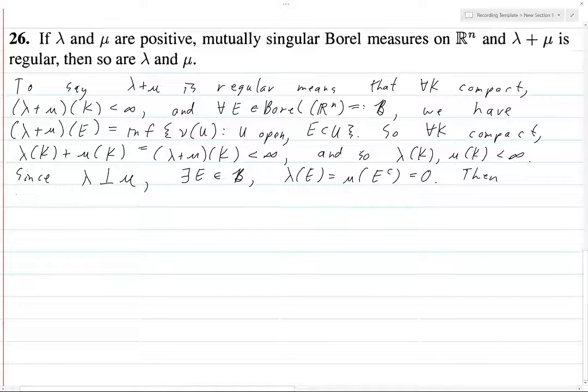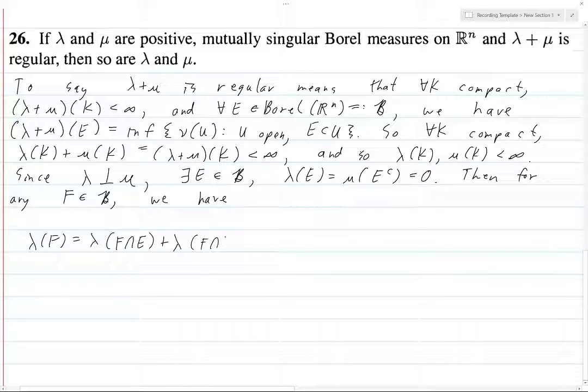Then say for any F in B, we have λ(F) is equal to λ(F ∩ E) + λ(F ∩ E^c), because measures are things that you can do this thing with. It's just disjoint additivity, or whatever the technical term for that is. But this is equal to λ of F ∩ E^c since λ doesn't live on E.